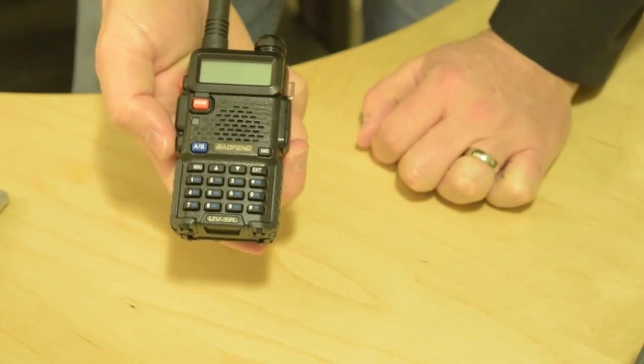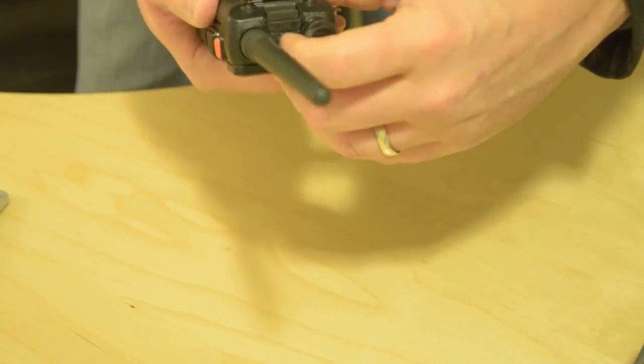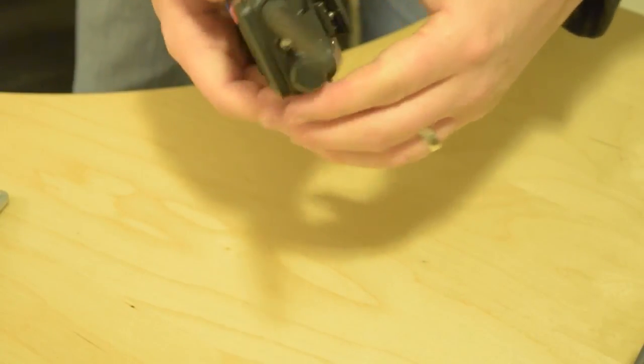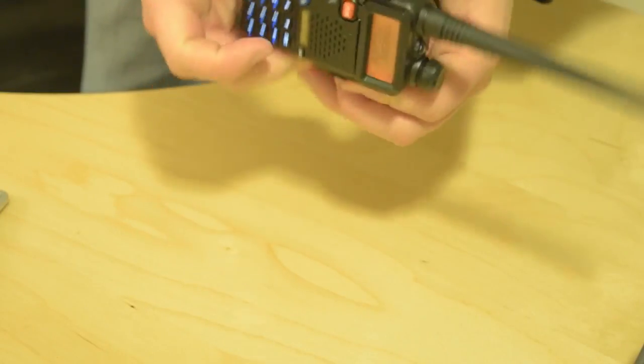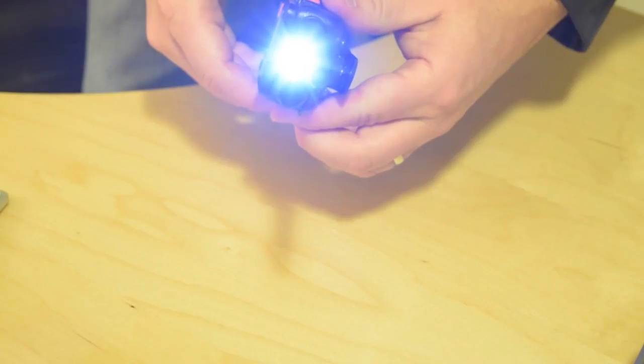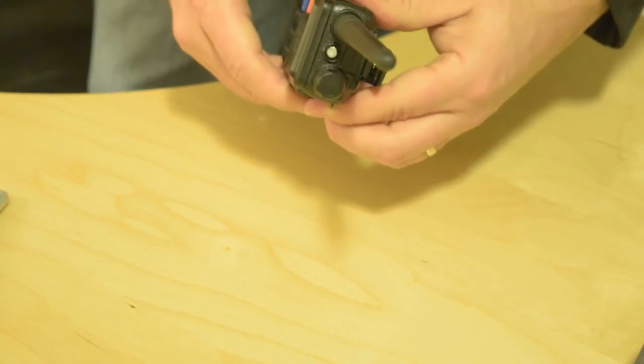So I want to show you a few features of this radio. It has an LED on the top of the radio itself so you can turn it on. There's a button on the side and you just tap it once and then tap again for strobe and then again for off.